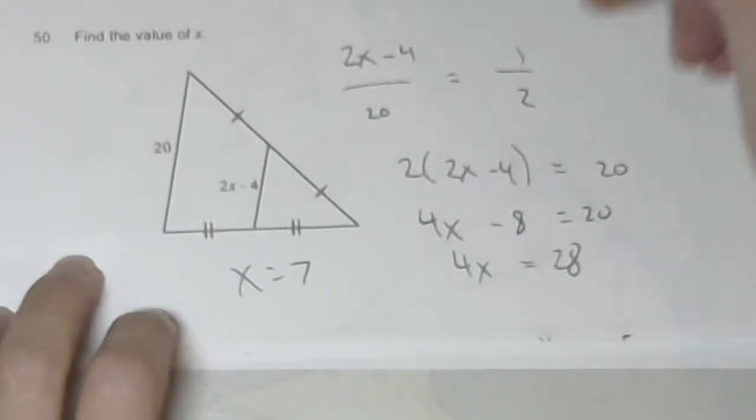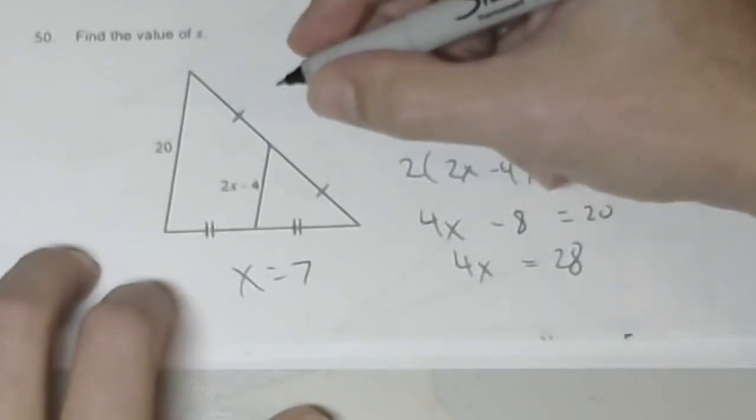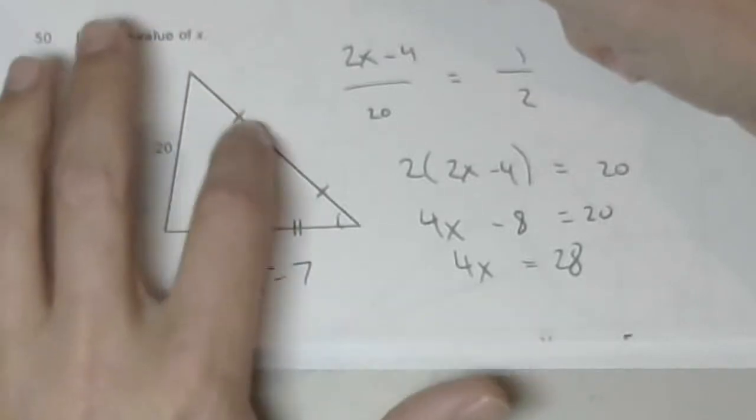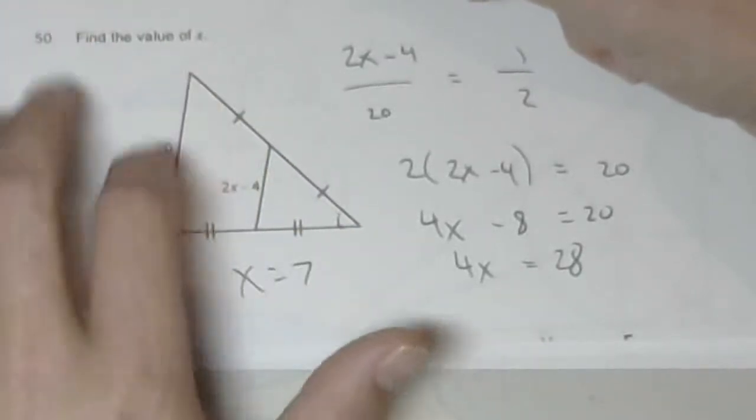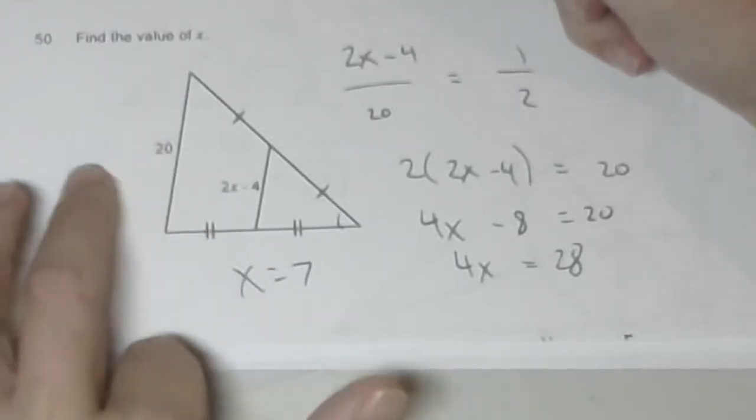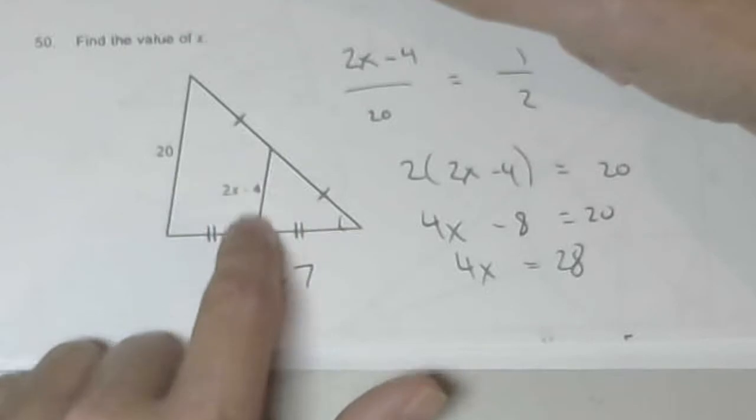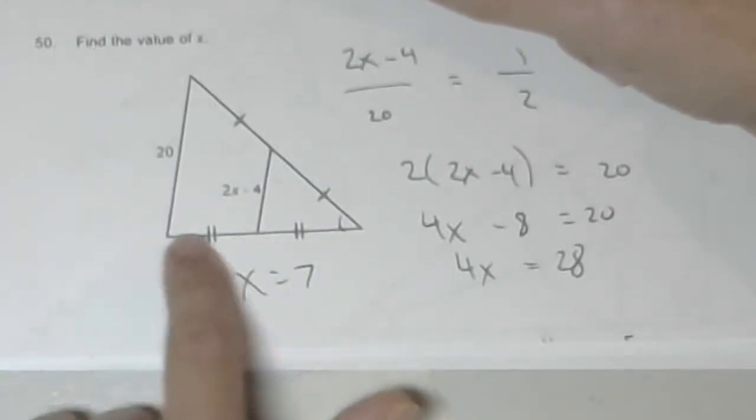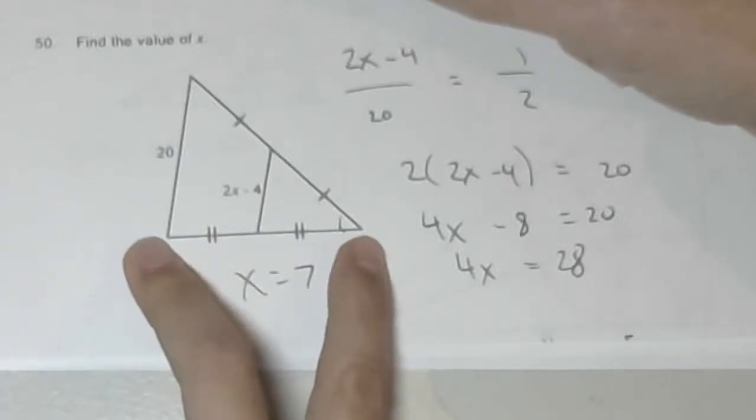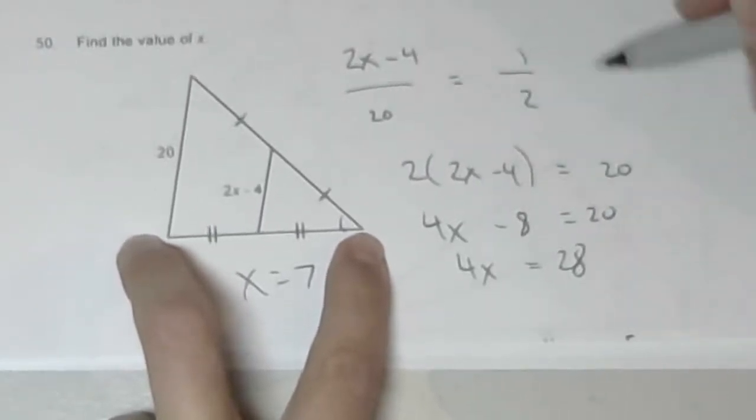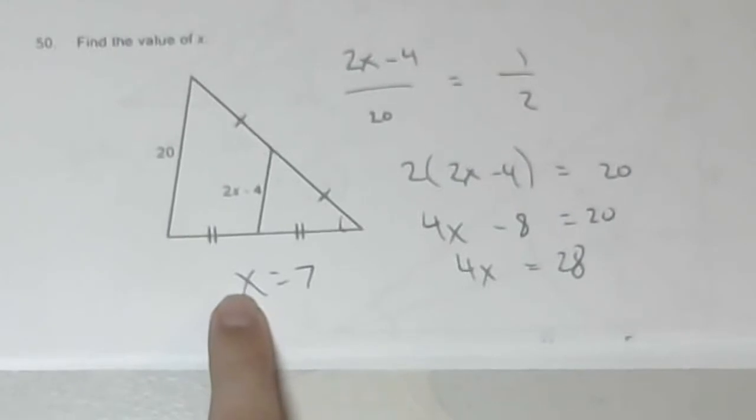Problem 50. Find the value of X. What I have are two similar triangles. This angle is equal to itself. This triangle, the cap here, and the whole triangle. So that means the sides are in proportion. So 2X plus 4 over 20 is going to equal 1 half, because this is the midpoint of this length. Then I cross multiply. 2 times quantity 2X minus 4 equals 20 times 1, or 20. Distributing, 4X minus 8 equals 20. Adding the 8, 4X equals 28. X equals 7.